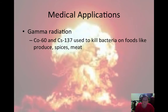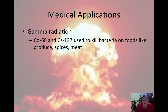Gamma radiation is also used in food to kill bacteria and other germs on produce — fruits, vegetables, spices, and meats. Cobalt-60 and cesium-137 emit gamma radiation in a way that is useful for food irradiation products.